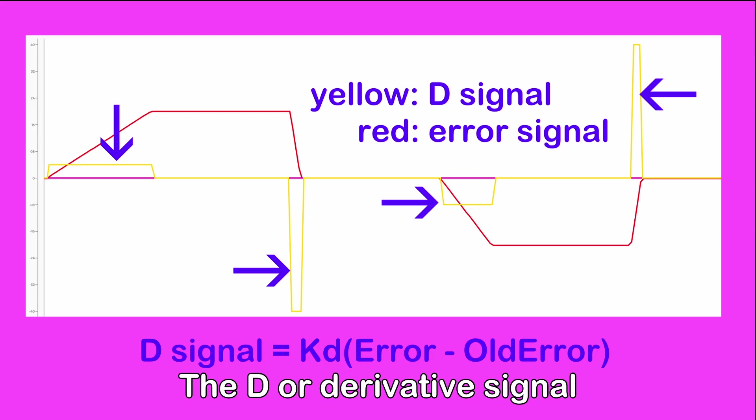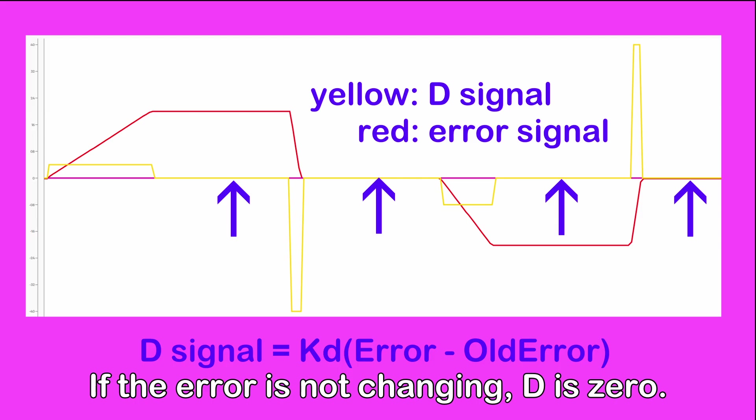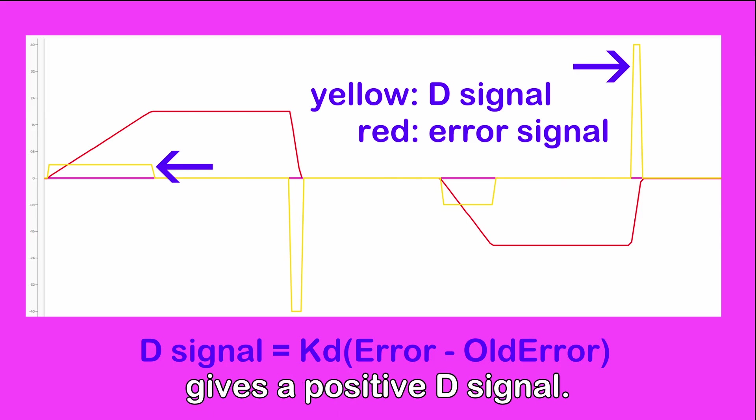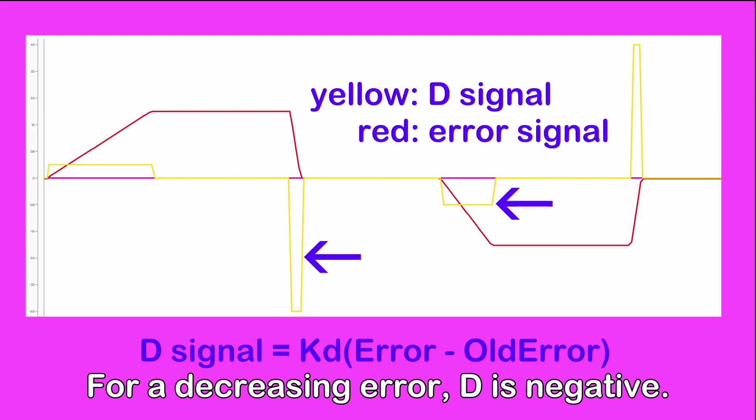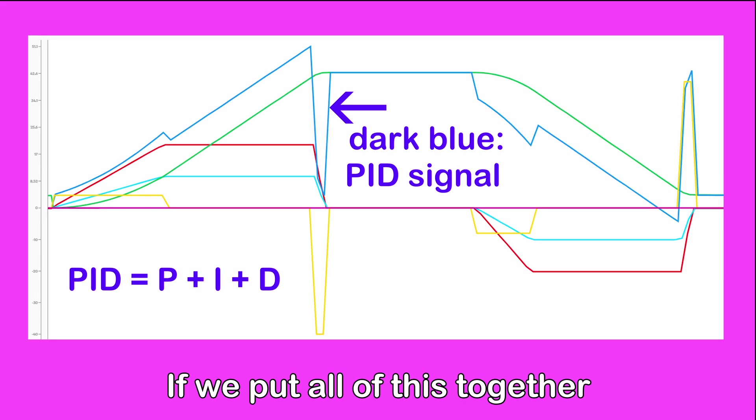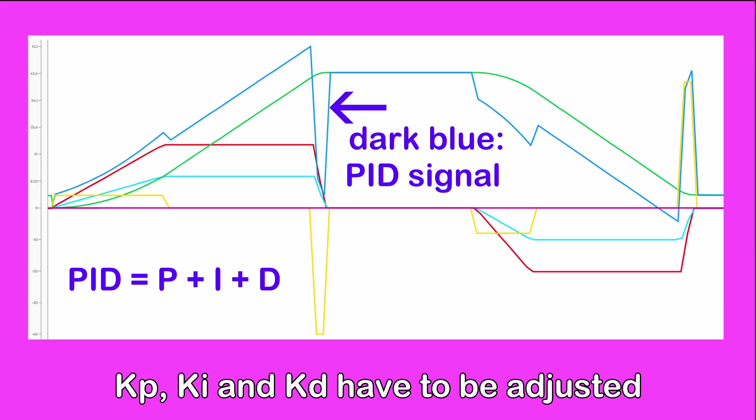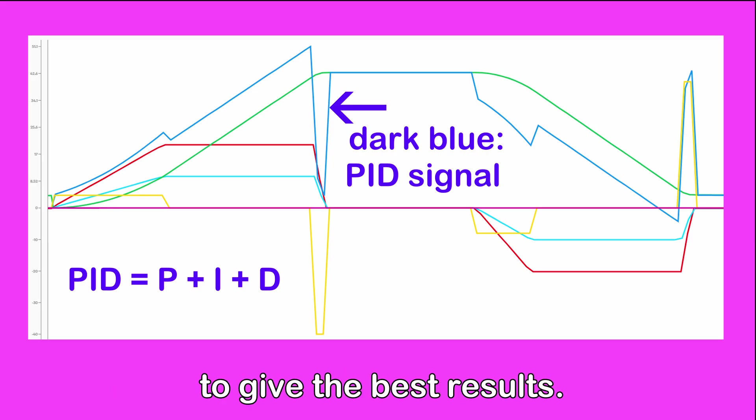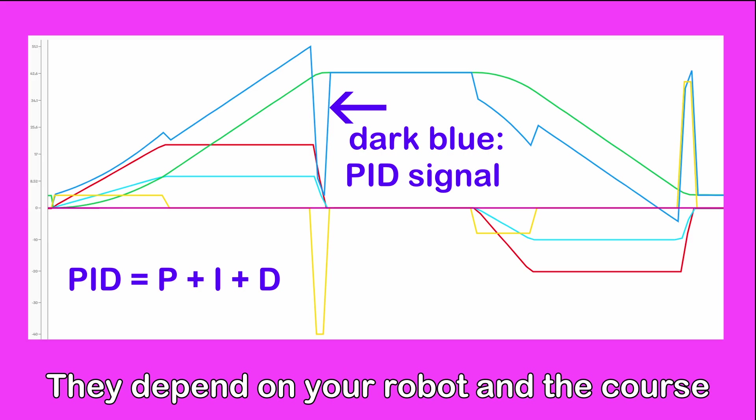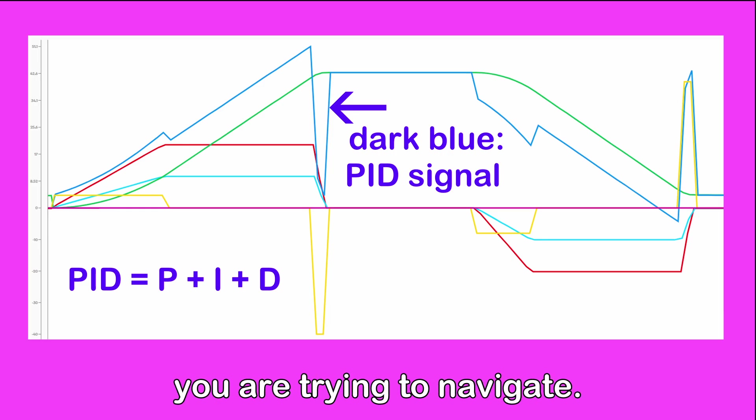The D or derivative signal is proportional to the rate of change of the error. If the error is not changing, D is 0. An increasing error gives a positive D signal. For a decreasing error, D is negative. If we put all of this together, we get the PID signal. KP, KI and KD have to be adjusted to give the best results. They depend on your robot and the course you are trying to navigate.